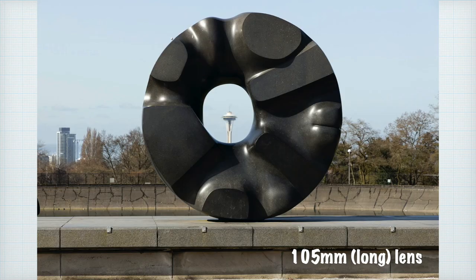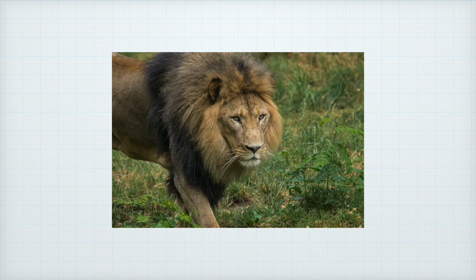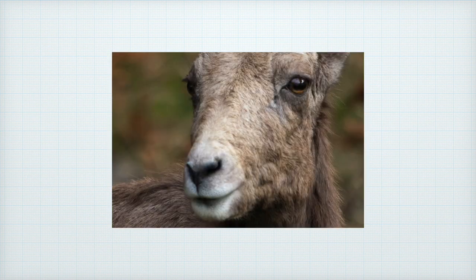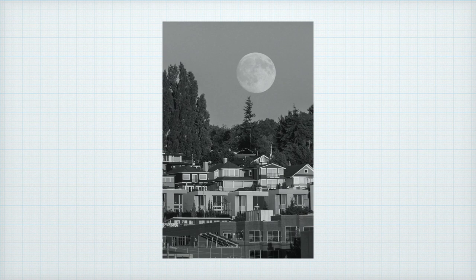A long lens brings things closer to you. Long lenses can be used when you can't get closer, such as photographing a sporting event or wild animals in the field. Long lenses are good for isolating a subject — their narrow view eliminates clutter, and the higher magnification makes the background blurry and more abstract. By allowing you to move back farther from the subject, you make the objects in the scene look closer than they are. This is often called telephoto compression, but the compression actually comes from the greater distance between the camera and the subject, not the lens design.